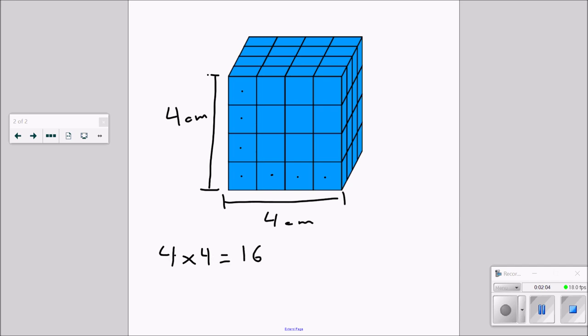But we can double check 1, 2, 3, 4, 5, 6, 7, 8, 9, 10, 11, 12, 13, 14, 15, 16. 16 centimeters. And I'm in two dimensions now. I'm counting squares. 16 centimeters squared.